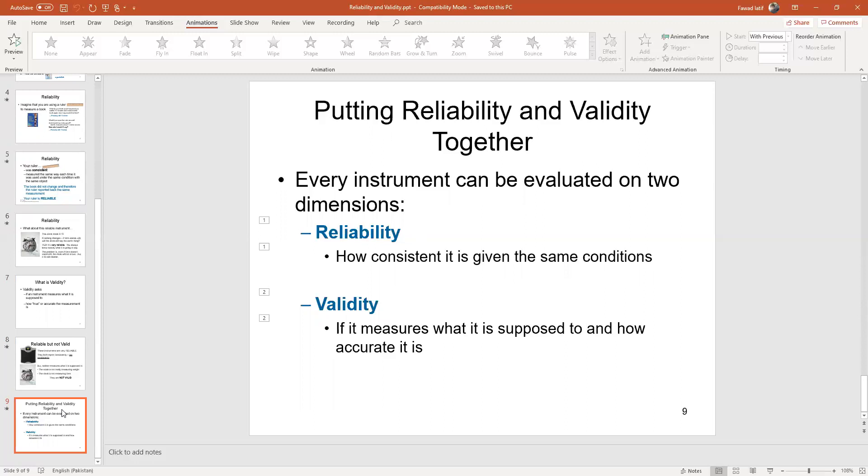Validity is whether under the same conditions with similar subjects it is actually measuring what it is intended to measure. So if it's not measuring what it intends to measure, it is not valid.